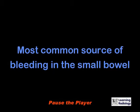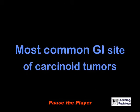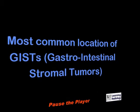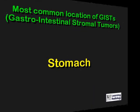What is the most common source of bleeding in the small bowel? Angiodysplasias, AVMs. What is the most common GI site of carcinoid tumors? The ileum. What is the most common location of GISTs, gastrointestinal stromal tumors? The stomach.